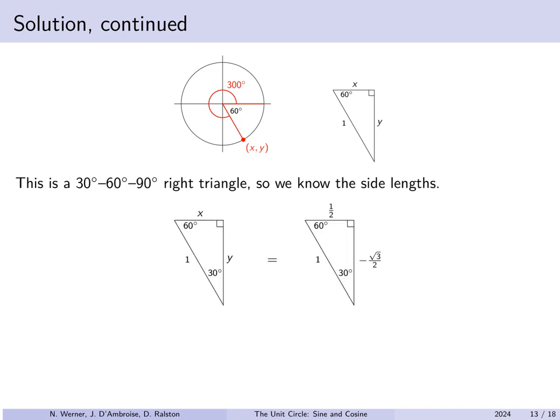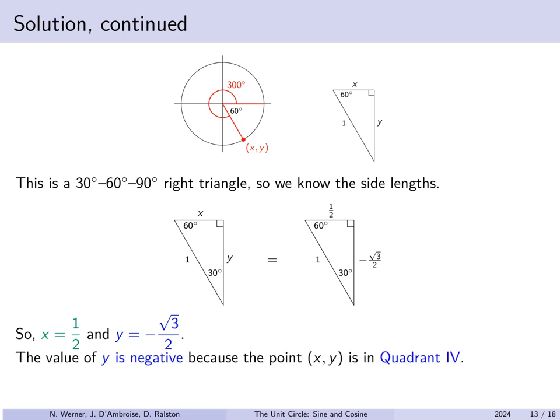Because we have a 60 degree angle and a right triangle, the missing angle is 30 degrees — we have a 30-60-90 triangle. With hypotenuse 1, the width is one half and the height is negative root 3 over 2 because we are in quadrant 4. So the x-coordinate is one half and the y-coordinate is negative root 3 over 2. Therefore the cosine of 300 degrees is one half and the sine of 300 degrees is negative root 3 over 2.